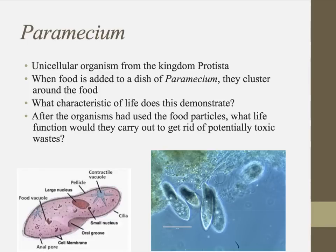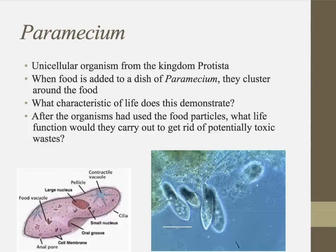You may be asked to explain how different cells show the characteristics of living things. One cell that's really great for studying this is the paramecium — a unicellular organism from the kingdom Protista. If you have a dish of paramecium and you add food to the dish, all of the paramecium will cluster around the food. Observing this, you would say they demonstrate nutrition, excretion of waste from that food, and metabolism — converting chemical energy as heterotrophs.